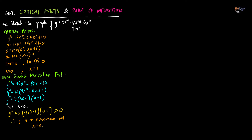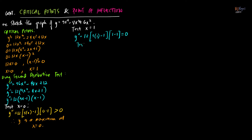Now we test the other critical value, x equals 1. y double prime is 12 times 3(1) minus 1 times 1 minus 1, which gives 1 minus 1, so y double prime equals 0. The second derivative test fails. So we go back to the first derivative test.